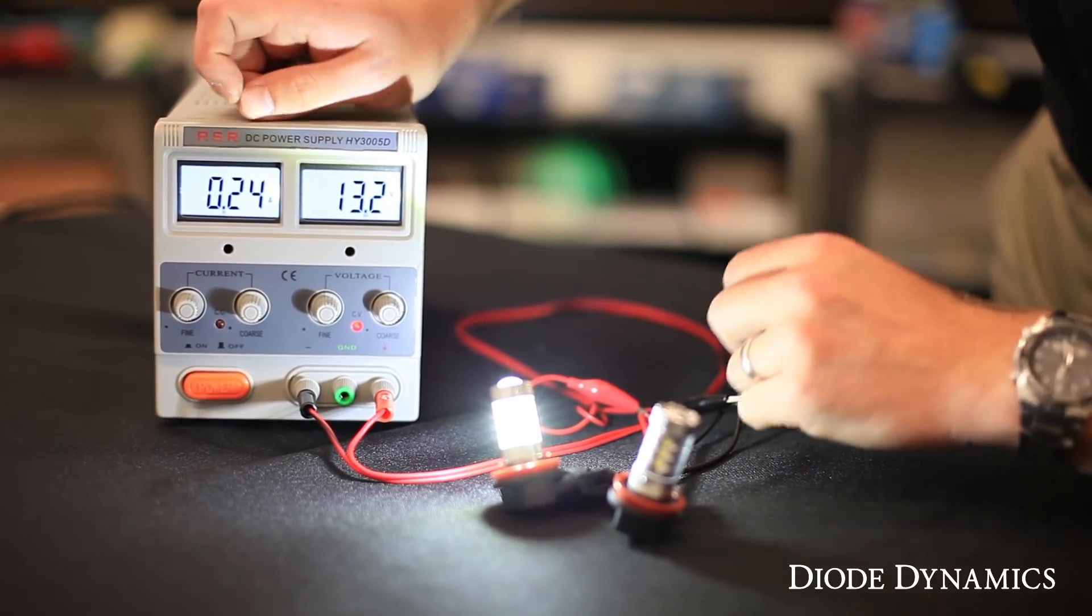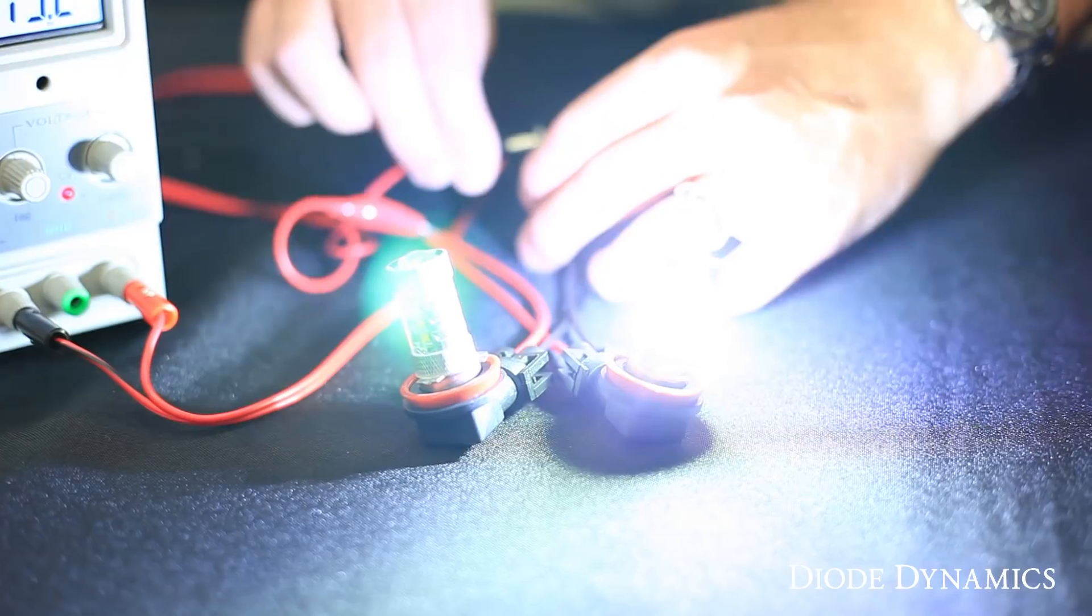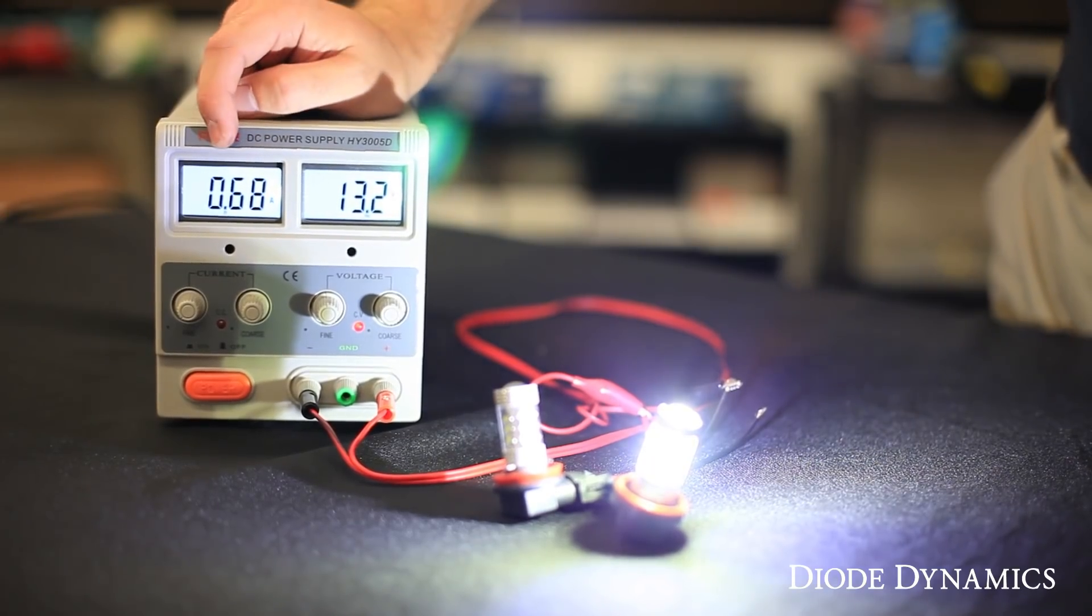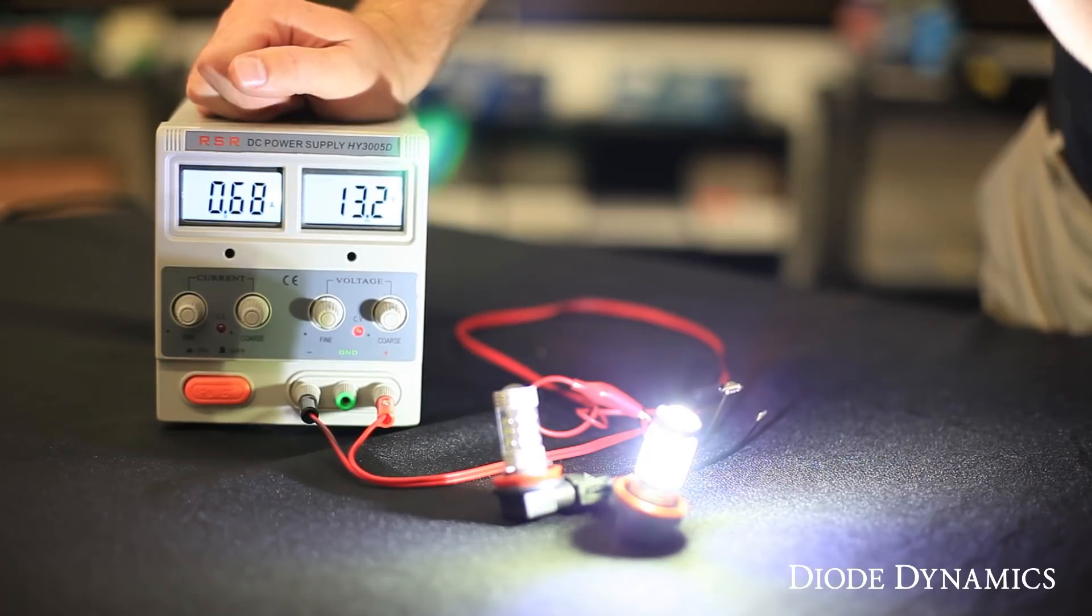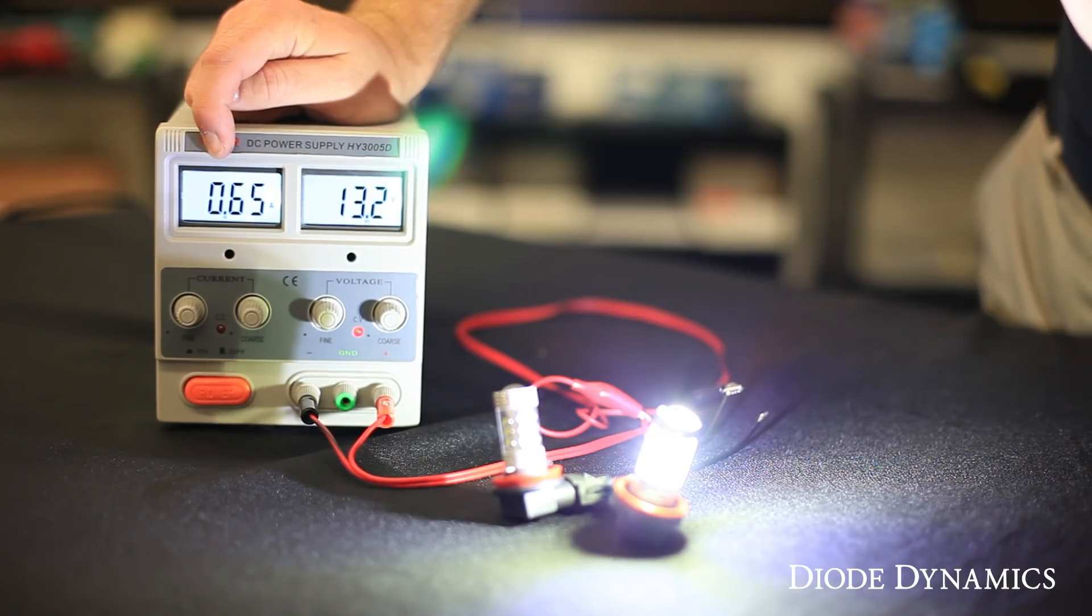Let's take a look at how the Diode Dynamics bulb does. Okay, we're going to hook just our Diode Dynamics bulb up, and you can see it's going to start about the same. So again, they're designed very similarly. However, the electronics in the Diode Dynamics bulb are going to efficiently dissipate the heat while maintaining the brightness and the total current.